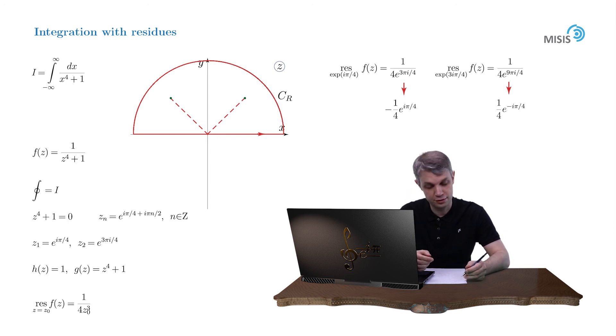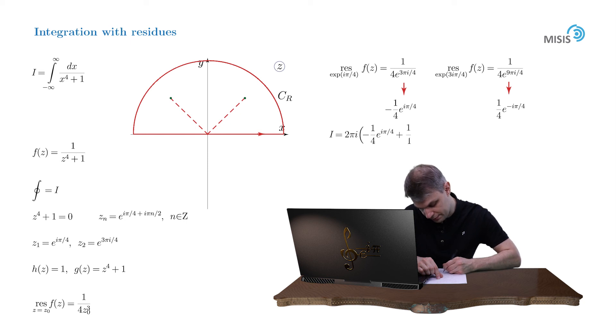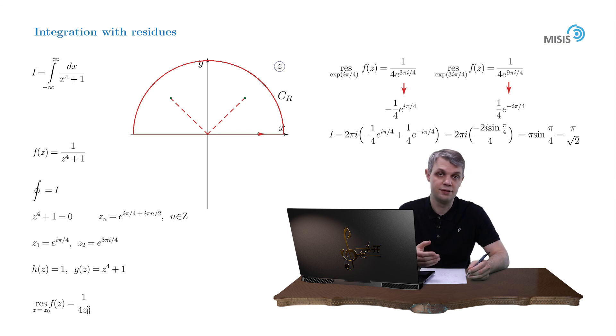Finally we have for our integral the following expression: 2πi times (minus 1 quarter e to iπ by 4 plus 1 quarter times e to minus iπ by 4). This sum can be organized into a sine function. In the braces we obviously have minus 2i sine π by 4 divided by 4. In this way we obtain our final answer for the integral, which is π times sine of π by 4, which yields π over square root of 2. That completes our first practice.